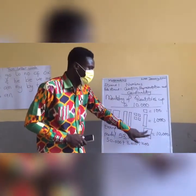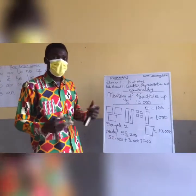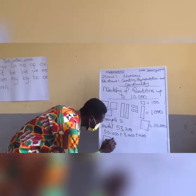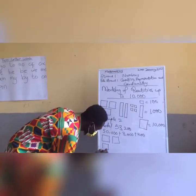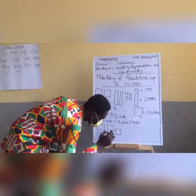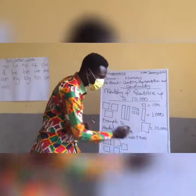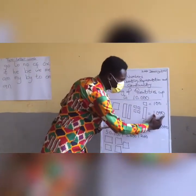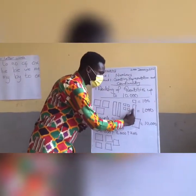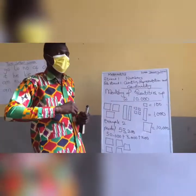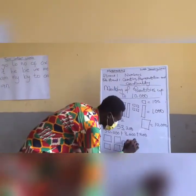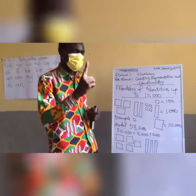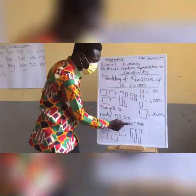If 10,000 gives me one flat, then 50,000 will give me five flats. I draw my 5 flats. Then we go to the 3,000. If 1,000 gives me one long, then 3,000 gives me three longs. I draw my three longs: 1,000, 2,000, 3,000.